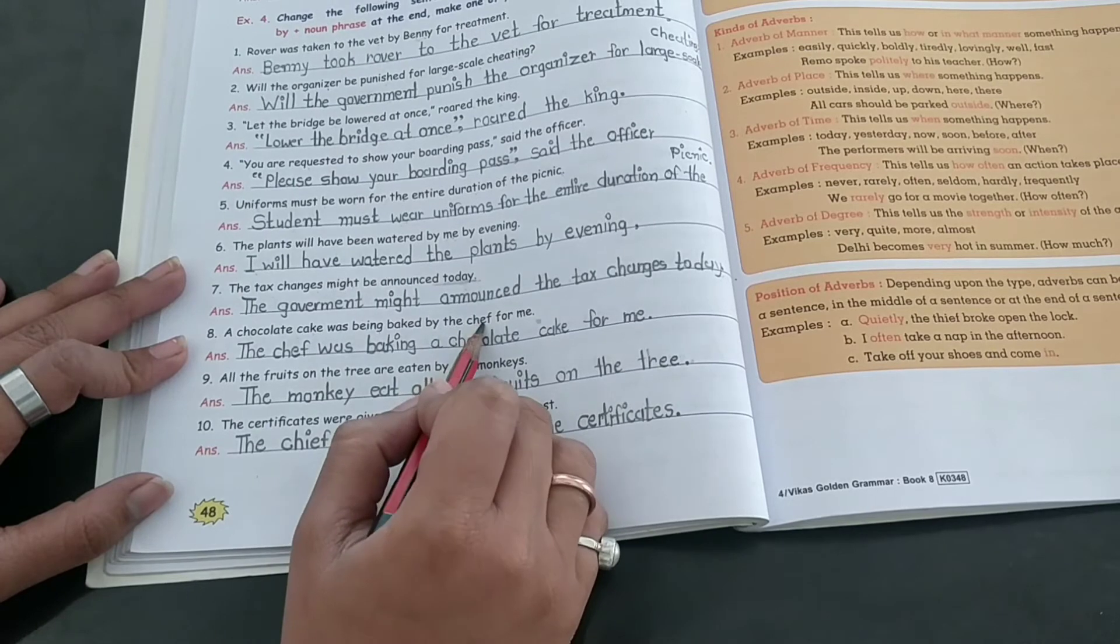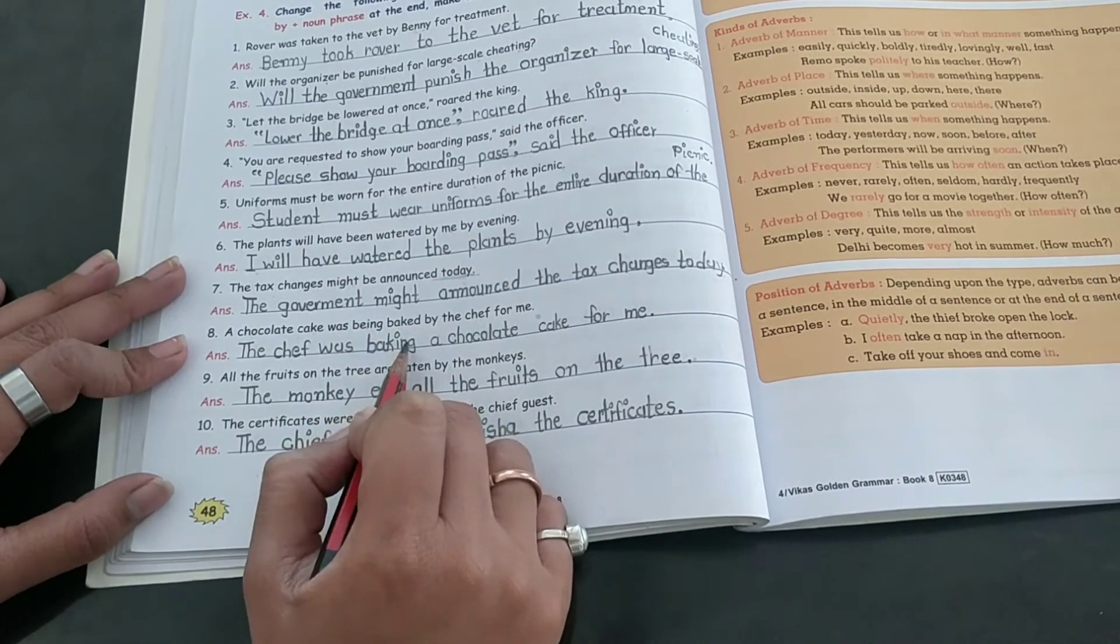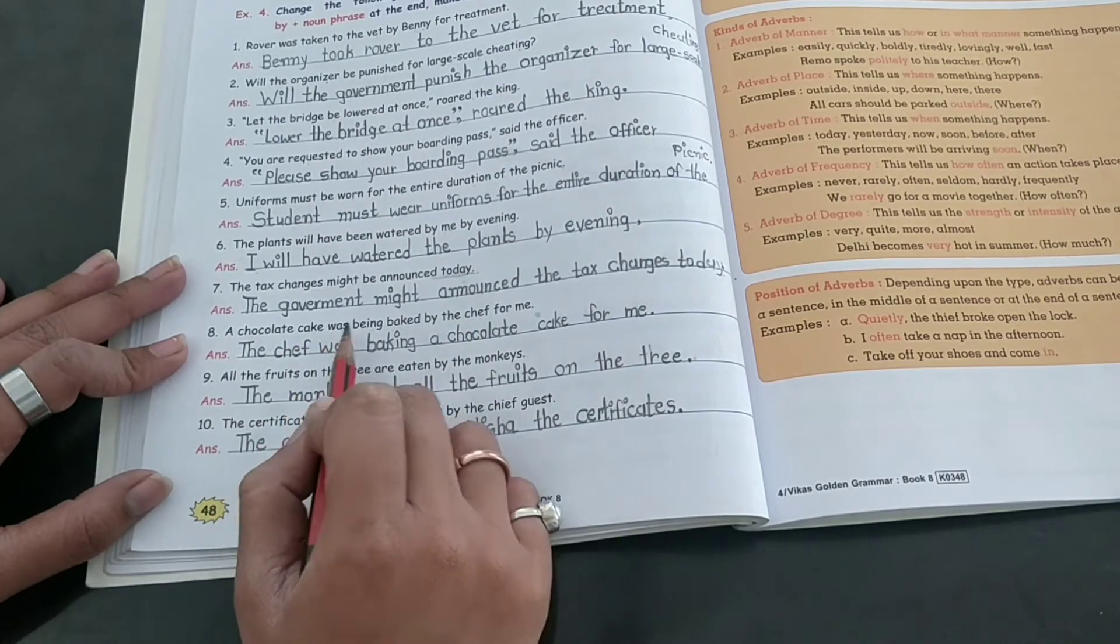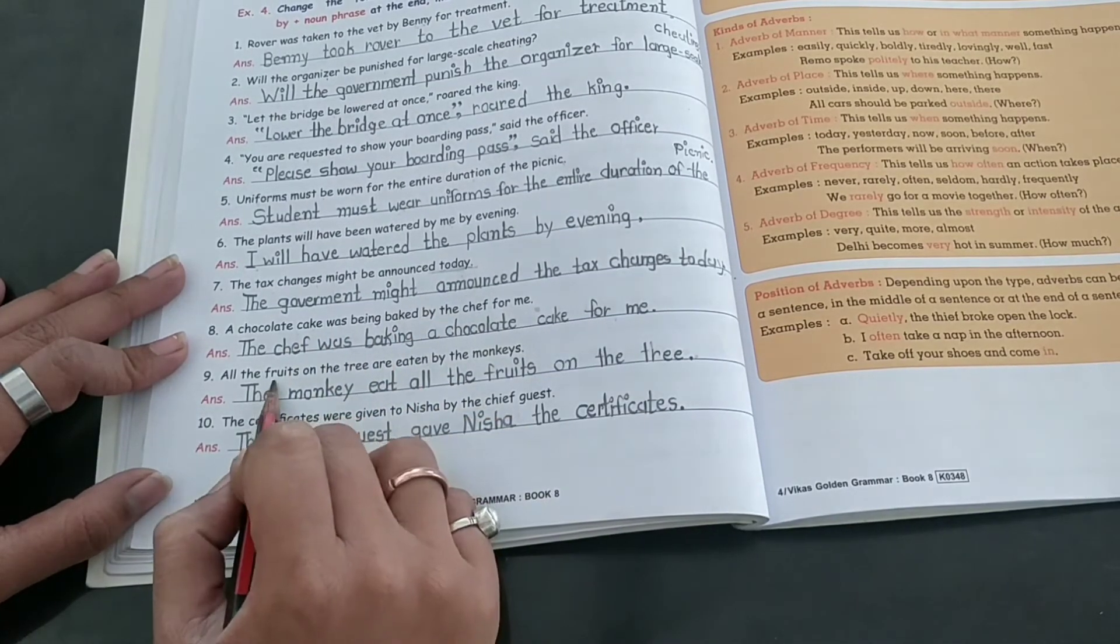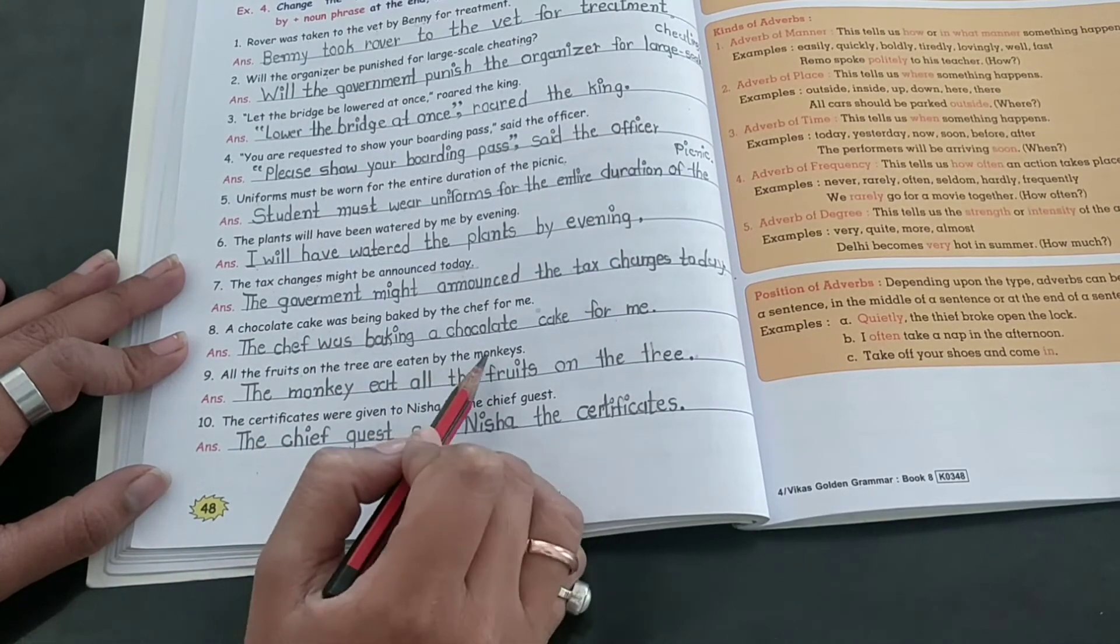The chef was baking a chocolate cake for me. All the fruits on the trees are eaten by the monkeys. The monkeys eat all the fruits on the tree.